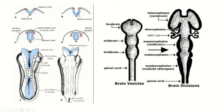The neural tube is first fused in a particular region, leaving two neuropores: the cranial neuropore and the caudal neuropore. The cranial neuropore closes within 25 days and the caudal neuropore closes within 28 days. The cranial end is dilated, forming three primary brain vesicles: the prosencephalon, mesencephalon, and rhombencephalon. The caudal portion remains narrow and forms the spinal cord.